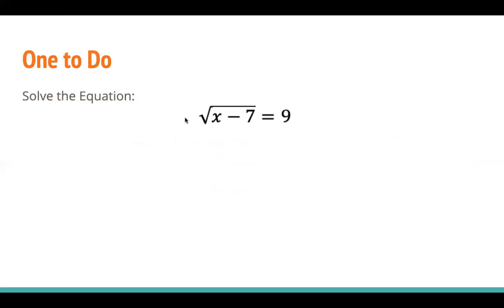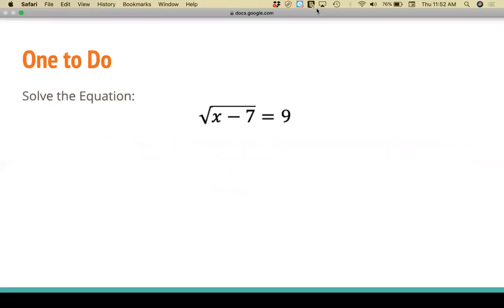And here's one to do on your own. So you can try this out and select on Edpuzzle the answer. Here I have square root of x minus 7 equals 9. What does this have to be to be true? All right, everybody, have a great day and I will see you soon.